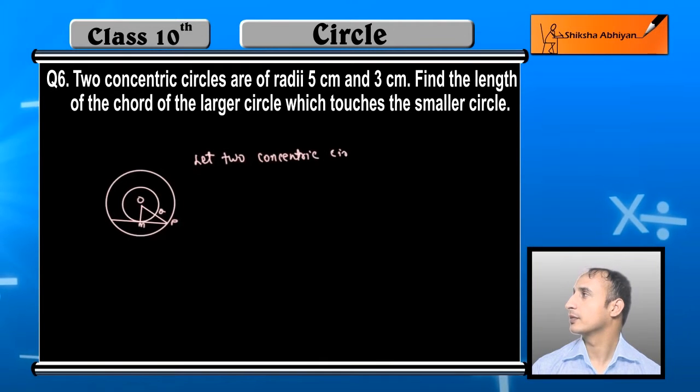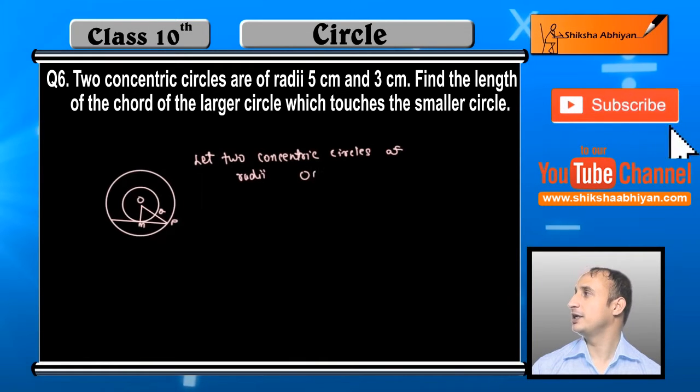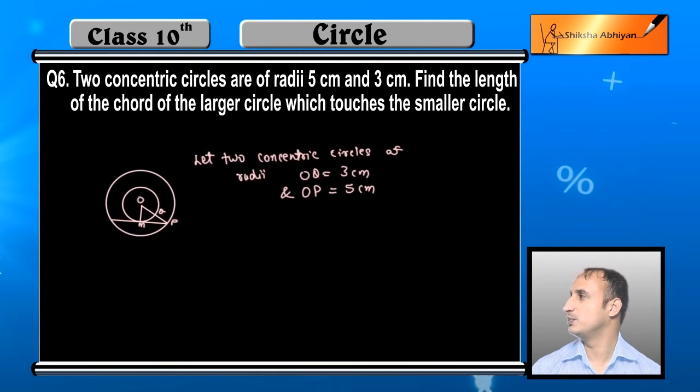So let two concentric circles, radius OQ is 3 centimeter for the smaller circle, and larger circle radius is OP which is 5 centimeter. So you have OQ is 3 cm and OP is 5 centimeter.